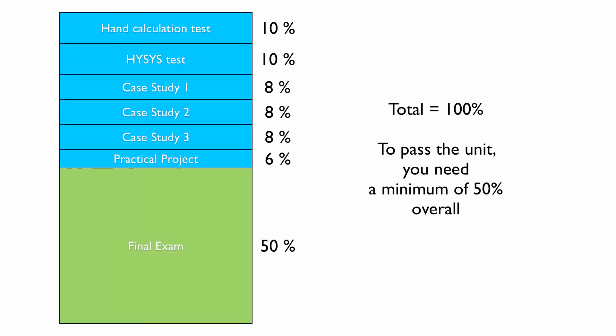All together, the total is 100%. And to pass the unit, to get a minimum of a pass, you need to get 50% of the overall marks.